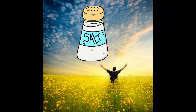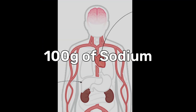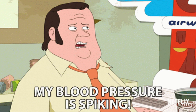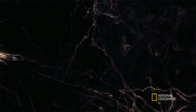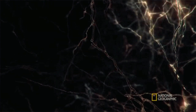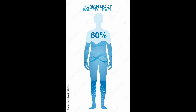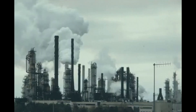Sodium is essential for all living things and most human bodies contain about 100 grams. Too much sodium can lead to high blood pressure and other cardiovascular issues. Sodium ions are crucial for transmitting electrical impulses in nerves and muscles, as well as regulating the water levels in tissues and blood by attracting water.